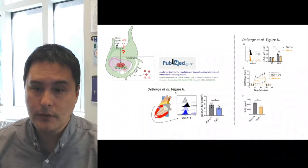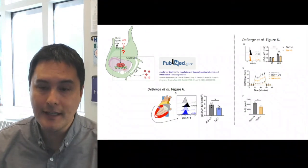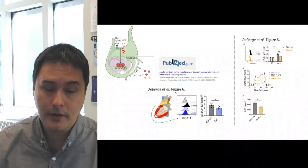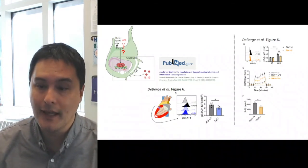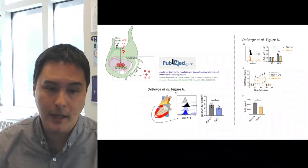We took notice of a publication that had linked STAT-1 in the regulation of LPS induced IL-1 beta production. Indeed in figure six Dr. DeBerge discovered in cardiac macrophages taken out of the heart after ischemia reperfusion that indeed they had reduced levels of STAT-1 in the absence of AXL.